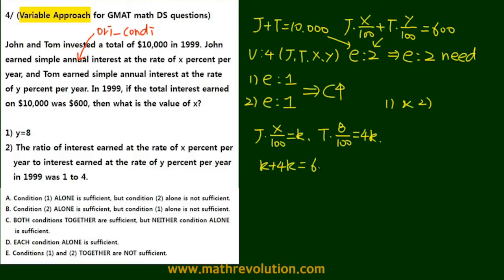k plus 4k is therefore 600, and 5k is equal to 600, meaning that k is equal to 120.